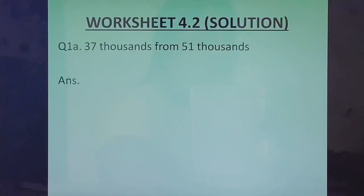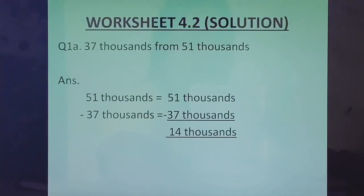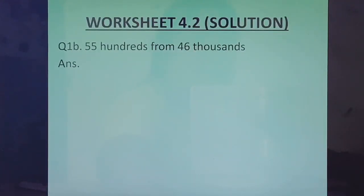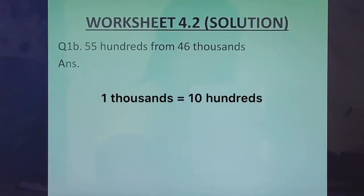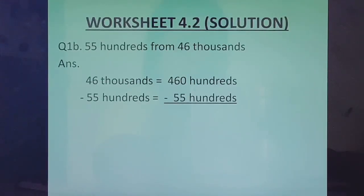Question 1, Part A: 37,000 from 51,000. Here we will not change anything because both are in thousands. We write 51,000 on top, below that 37,000, and subtract. We get 14,000. That is our answer. Part B: 55 hundreds from 46,000. We convert 46,000 into hundreds. 1,000 is equal to 10 hundreds, so 46,000 is equal to 460 hundreds. Then 55 hundreds subtracted gives 405 hundreds.